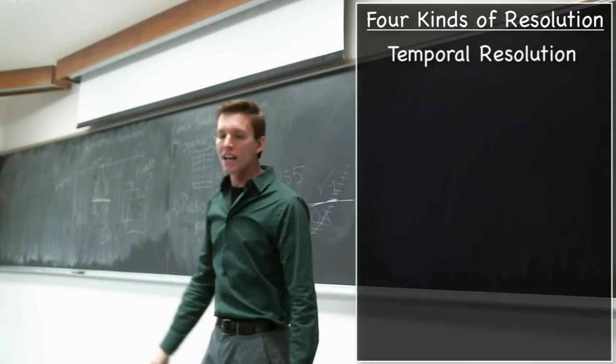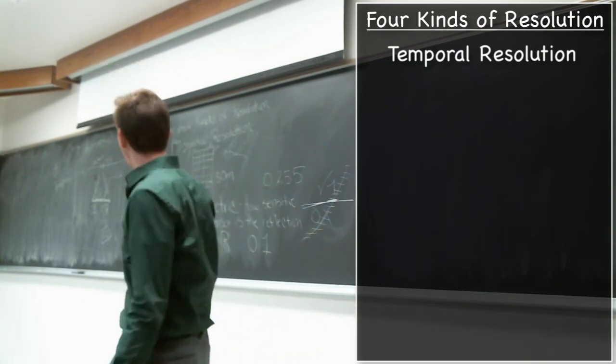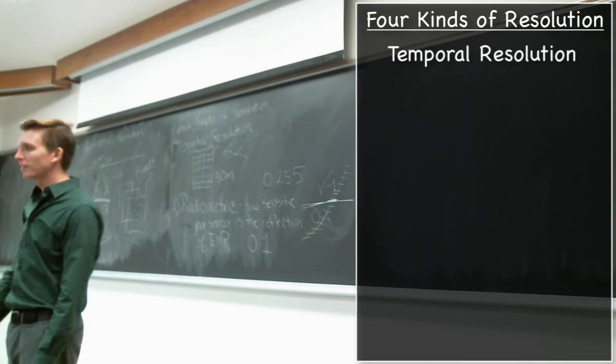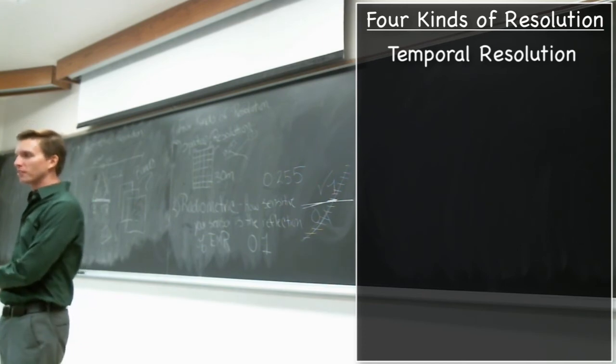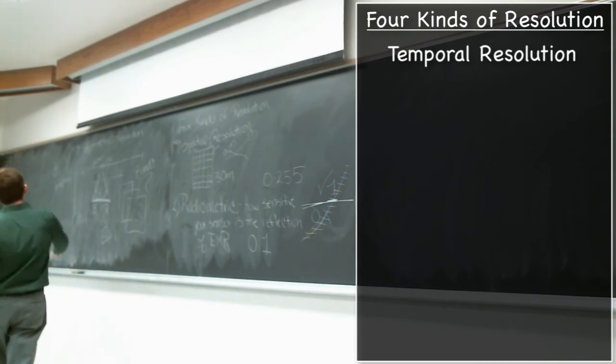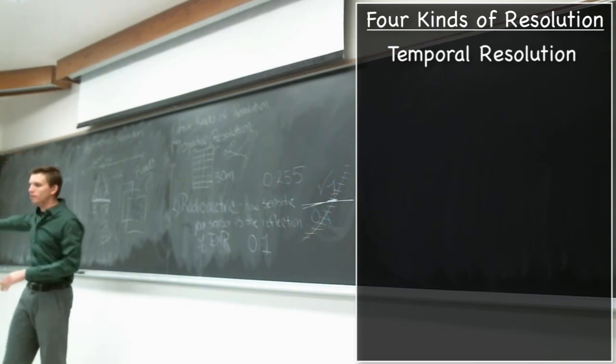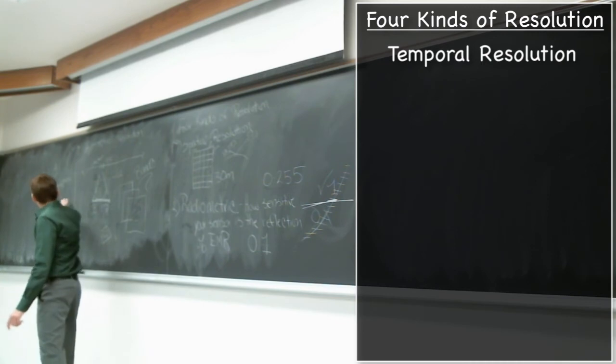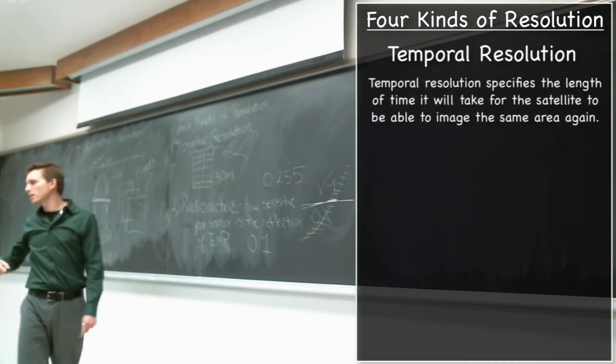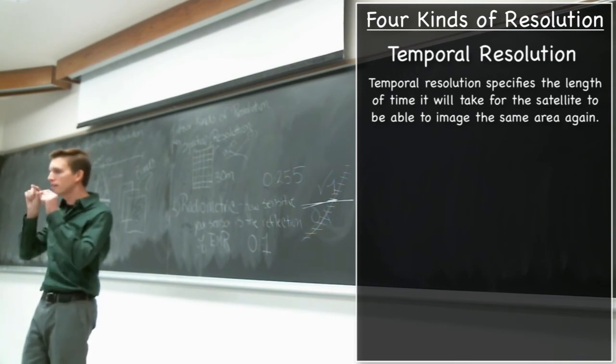If I were to take a picture and I said give me 30 pictures a second, well then I've got basically video, right? I'm keeping also a temporal log on this. In terms of satellite imagery though, you're talking about once a satellite goes over a particular area, how long will it be before the satellite can image that same location?